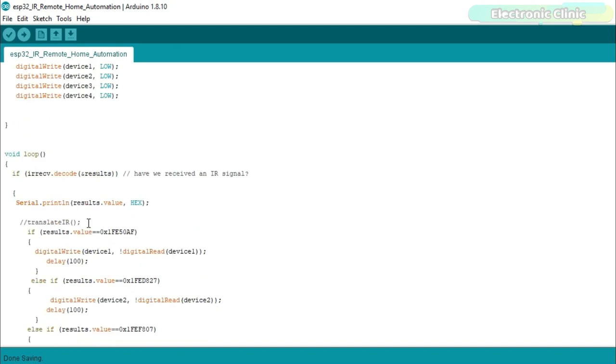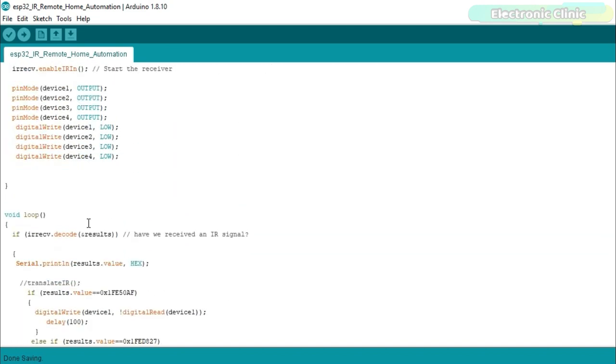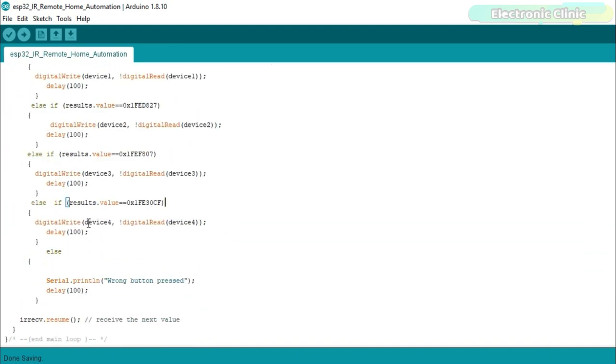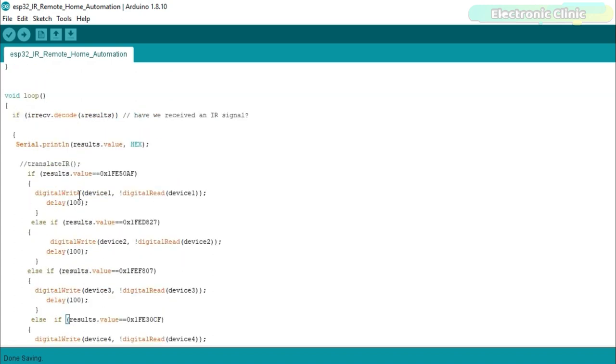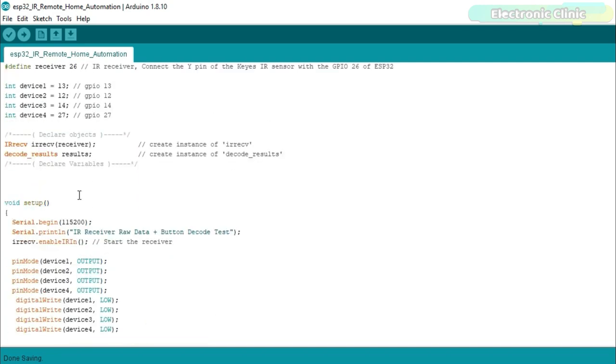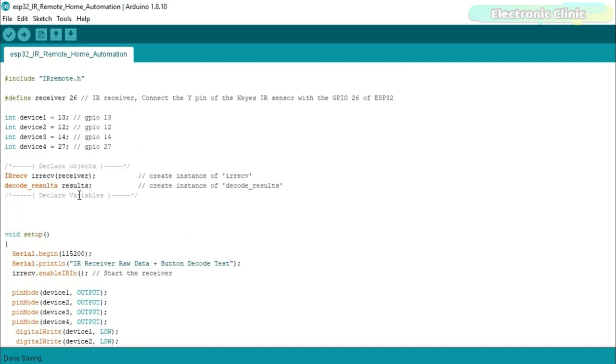The rest of the program is pretty straightforward. We check the code and turn on or turn off the desired load. So that's all for now. I have already uploaded this program. Let's watch the ESP32 and IR remote based home automation project in action.